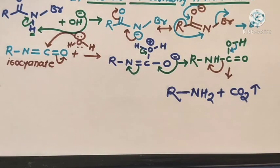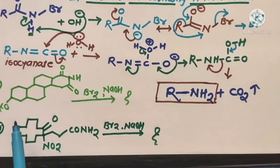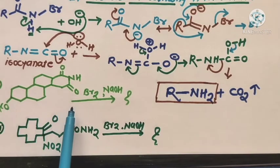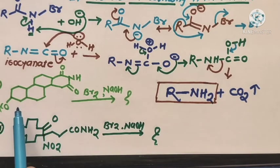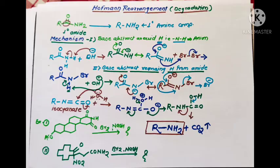The final product of this reaction is the primary amine RNH2, with elimination of CO2 (carbon dioxide gas). Now there are two practice examples — you can write the correct mechanism as well as the product of this reaction.